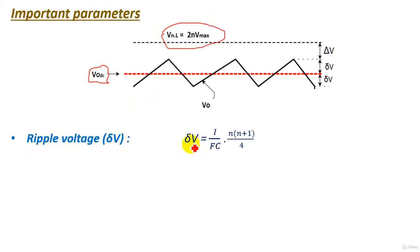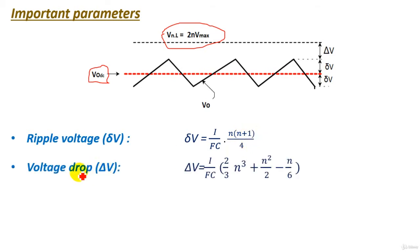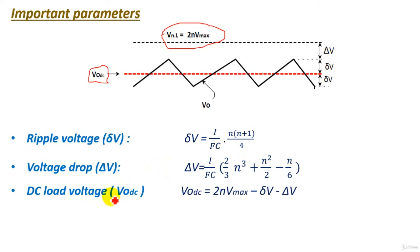The ripple voltage can be calculated from the formula: ripple voltage = (I / f·C) × n(n+1)/2. The voltage drop can be calculated from: ΔV = (I / f·C) × (2/3·n³ + n²/2 − n/6), where n is the number of stages, f is the supply frequency, C is the capacitance, and I is the load current.